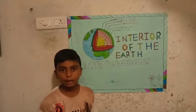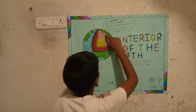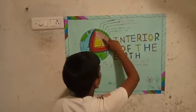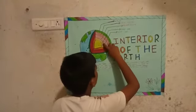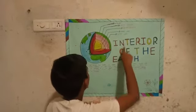Inner earth has five layers. The upper part of the earth is crust. The second part of the earth is upper mantle. The third part of the earth is lower mantle. The fourth part of the earth is outer core. The fifth part of the earth is inner core.